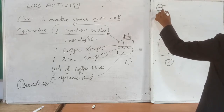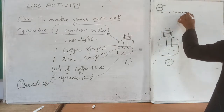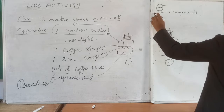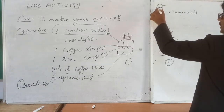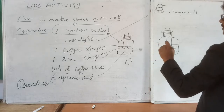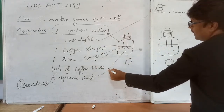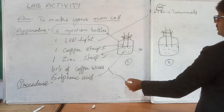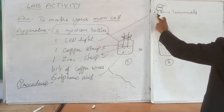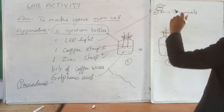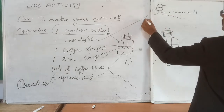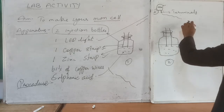The LED bulb has two terminals — one is the positive terminal and the other is the negative terminal. Now take bits of copper wires and connect one bit of copper wire to the positive terminal of the LED bulb and another bit of copper wire to the negative terminal of the LED bulb.